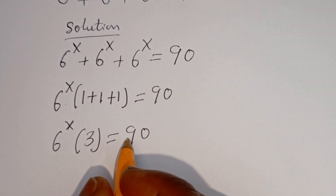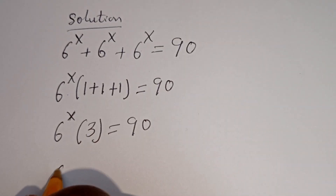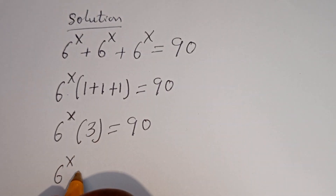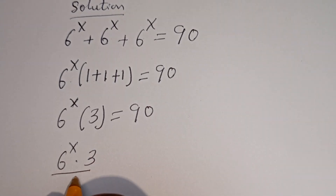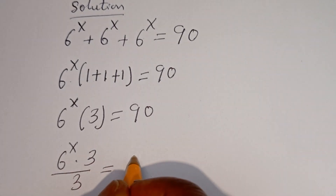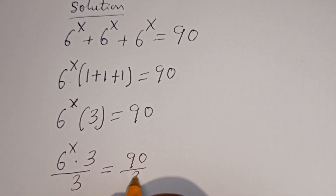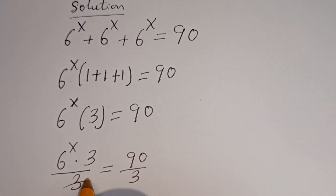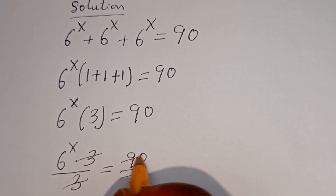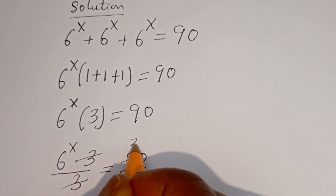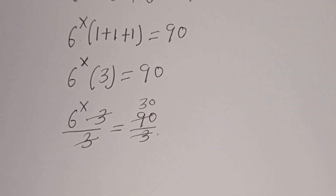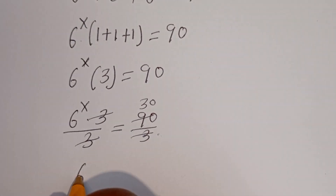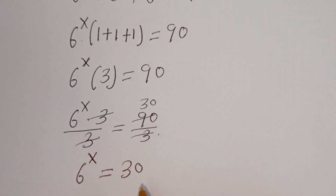Let's divide both sides of this equation by 3. We have 6 to the power of x multiplied by 3 divided by 3 is equal to 90 divided by 3. This gives us 30. So 6 to the power of x is equal to 30.